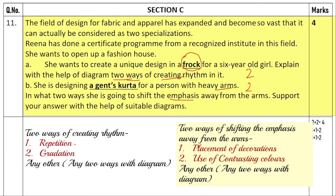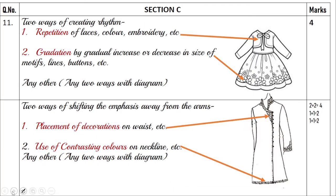Each way carries one mark. Two ways for creating rhythm are repetition or gradation — you can also write down any other way of creating rhythm, such as radiation. Two ways of shifting the emphasis are placement of decoration or use of contrasting colors. You can write down any other method of shifting the emphasis as well.